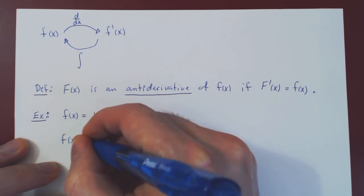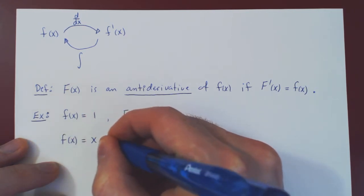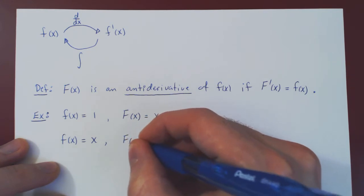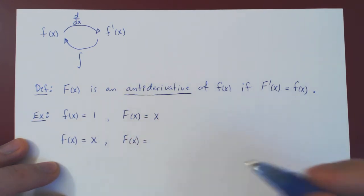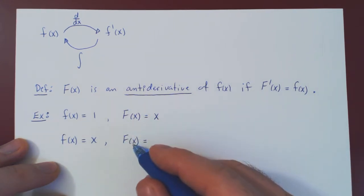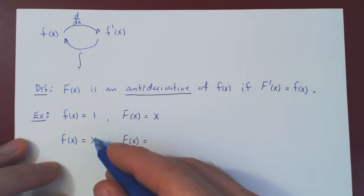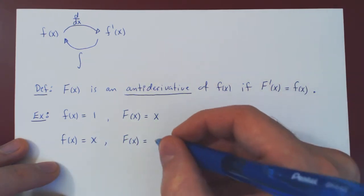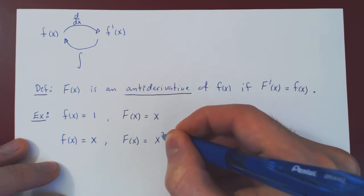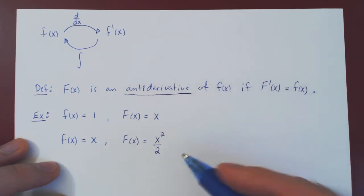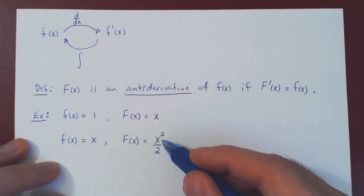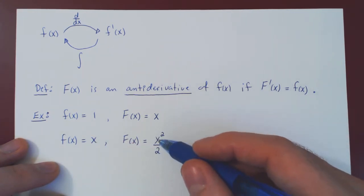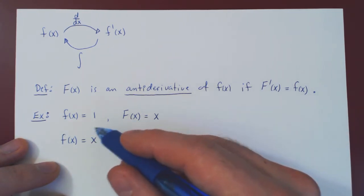What if f of x was equal to x, and we asked for an antiderivative of x? We are looking for a function whose derivative is x. As you'll find out, it's just x squared over 2. If you differentiate x squared over 2, you obtain x. And so x squared over 2 is an antiderivative of x.